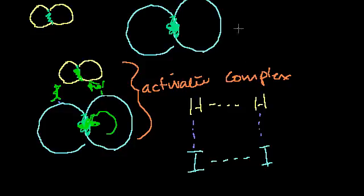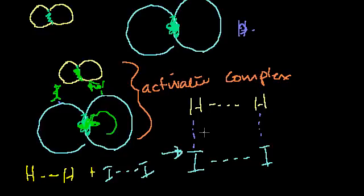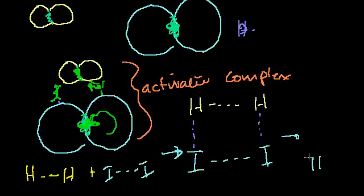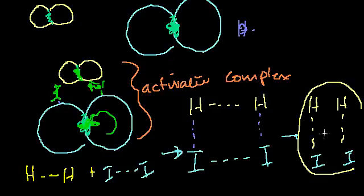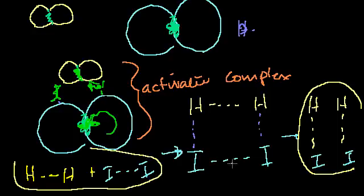You're going from both molecules separate — the hydrogen separate plus the iodine separate — to this higher energy state. But if they can get to that higher energy state, if there's enough energy for the collision and they have enough kinetic energy when they hit in the right orientation, then from this activated complex or higher energy state, it will go to the lowest energy state. And the lowest energy state is the hydrogen iodide. This is actually a lower energy state than the reactants, but in order to get there, you have to go through a higher energy state.